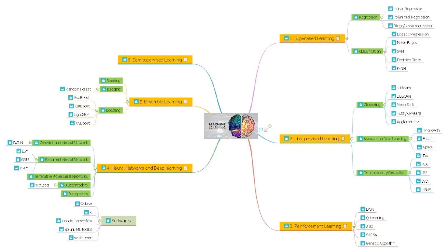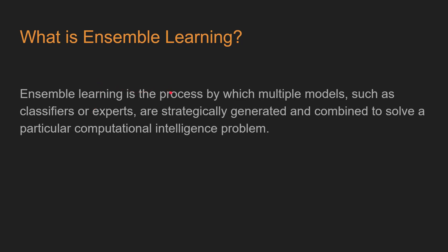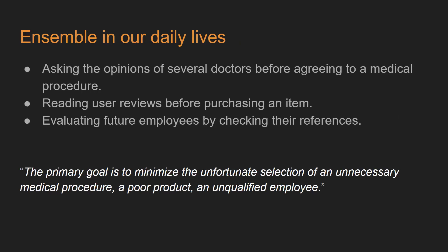Ensemble learning is a process by which you use multiple models — such as different classifiers or experts — strategically generated and combined to solve a particular computational problem. To solve a problem you will require multiple models, which could be models of similar algorithms or different algorithms. There will be multiple models and you combine their outputs to produce the final prediction.